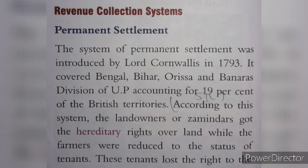The system of Permanent Settlement was introduced by Lord Cornwallis in 1793. It covered Bengal, Bihar, Orissa and the Banaras Division of UP, accounting for 19% of the British territories.